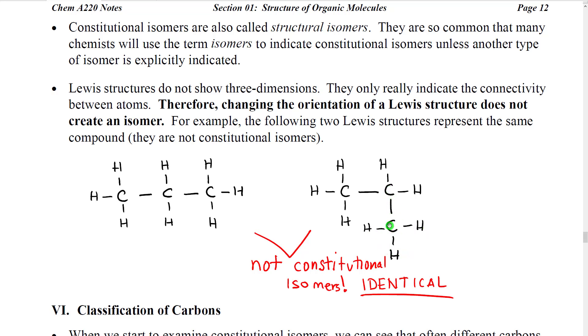Well, that 90-degree turn is not relevant to its connectivity, because this is not a three-dimensional representation. This carbon with two hydrogens is still connected here to a carbon with three hydrogens. We read them identically. Therefore, they are not constitutional isomers. They are identical structures.